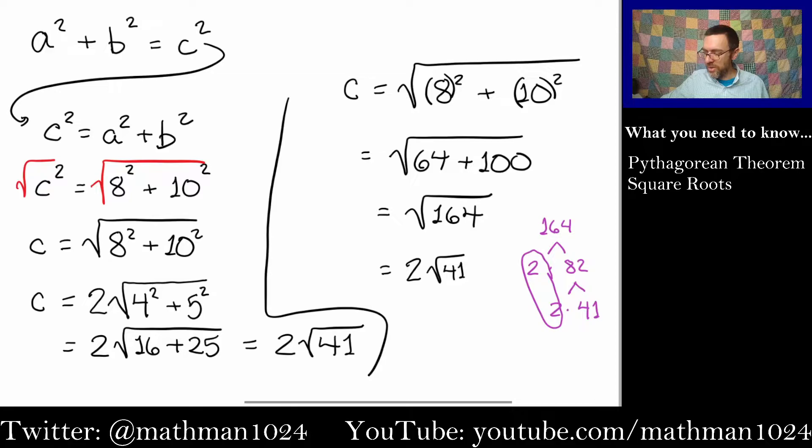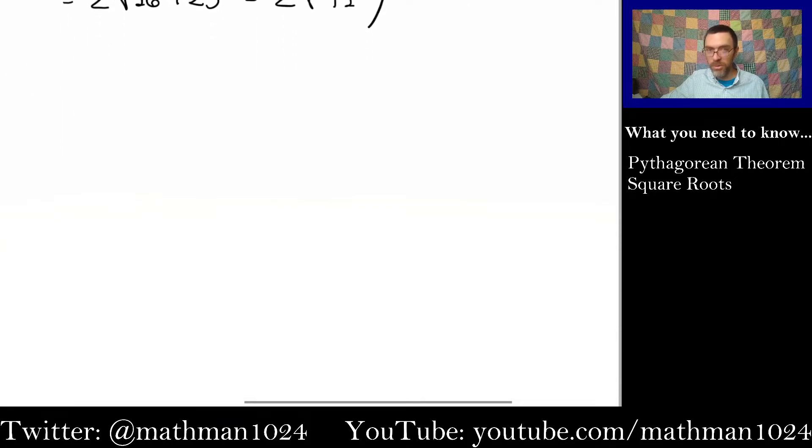So, let's try the same hack with a slightly different problem. We're talking about the Pythagorean theorem, so we might as well use that a little bit more. So, suppose that I tell you that the hypotenuse is 21, and one of the legs is 14, and I want to know what is the length of that side.